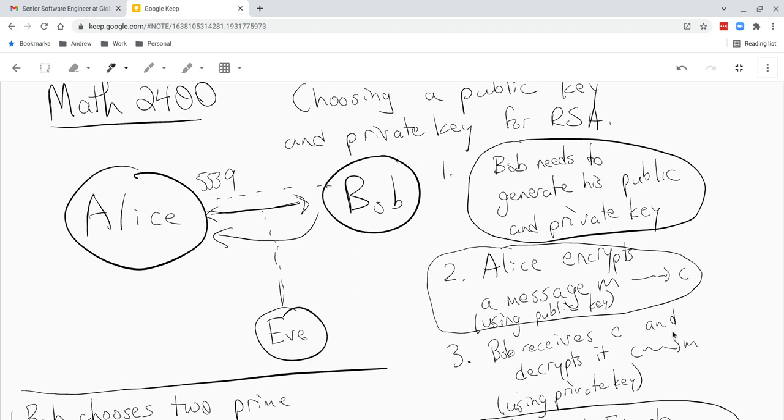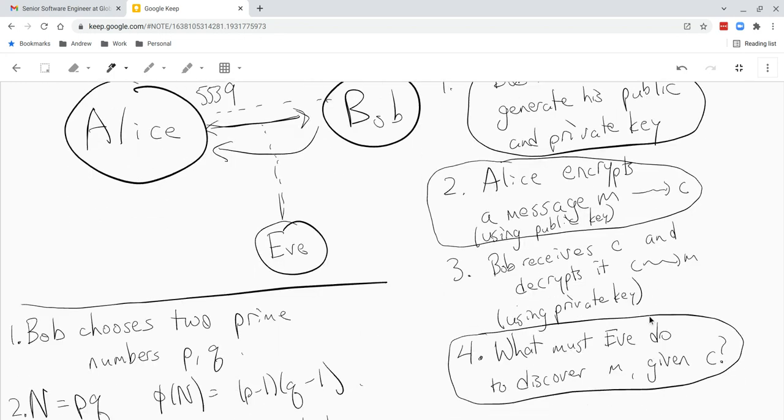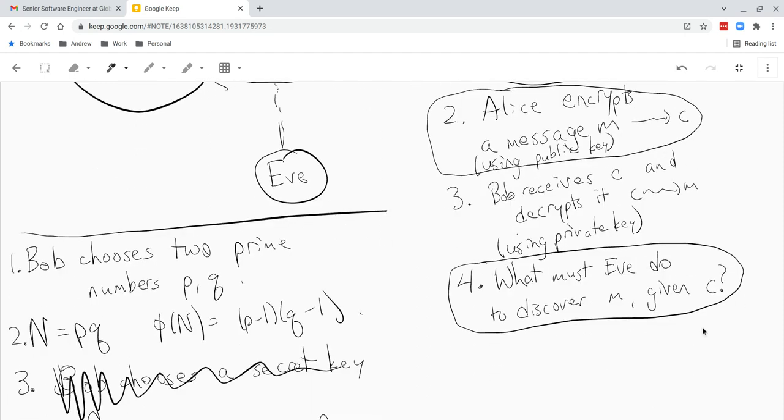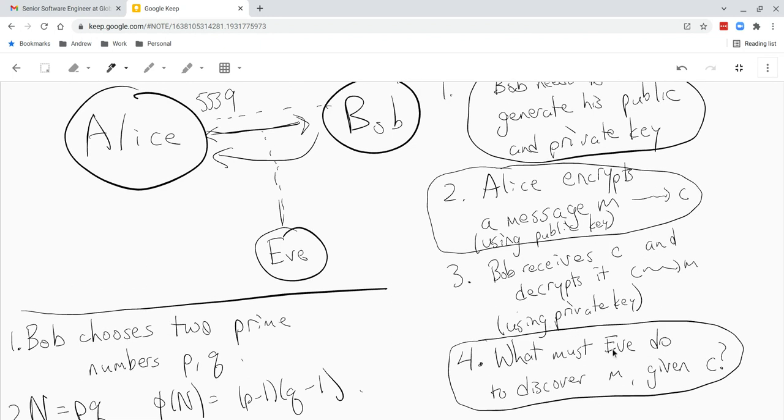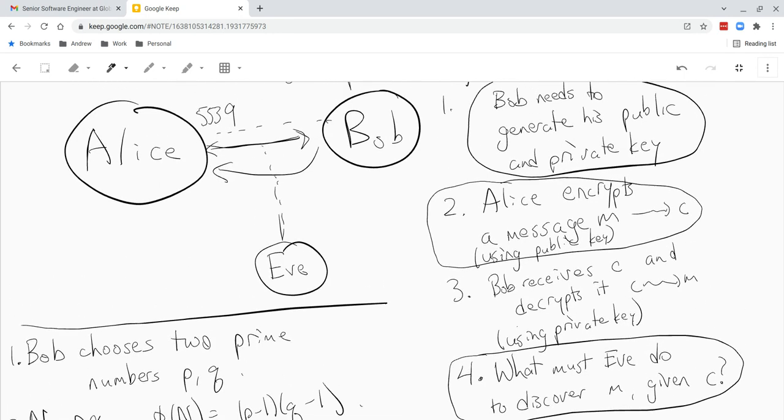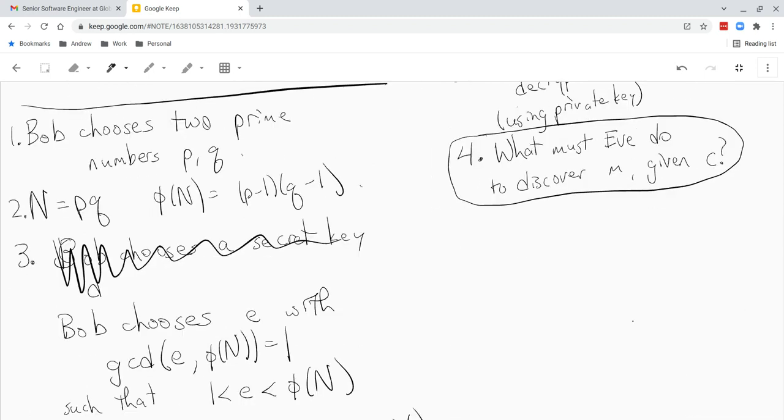Now that's all good, but if Eve can also decrypt M, then that's not very good. So we want to make sure that it must be hard for Eve to recover M if she's given C. And actually this problem, I'm simplifying it a lot. There's a lot of things that can go wrong in this step. But I'll just give you a brief idea of what happens when we try and break this system.